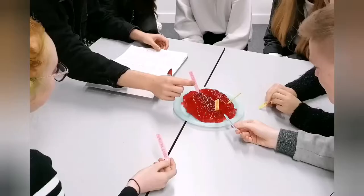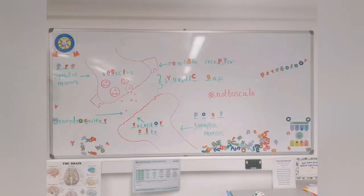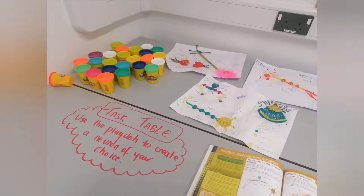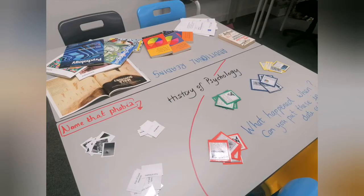We've dissected jelly brains. We also do a lot of role play in terms of counselling role play, such as systematic desensitisation, which is a technique used to help people get over specific phobias. In psychology, we like to keep things interactive — we love our Play-Doh and use this a lot for neuron and synaptic transmission work, as well as interactive whiteboard activities and quizzes.